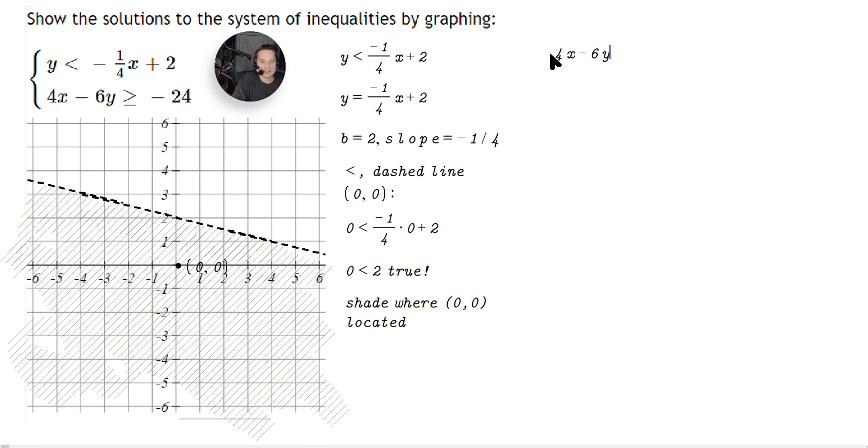So it says four X minus six Y is greater than or equal to negative 24. First of all, notice you can just divide each term by two because two is a common factor. So you're going to have four divided by two, which is two X. Six divided by two is three Y. And then negative 24 divided by two is negative 12.